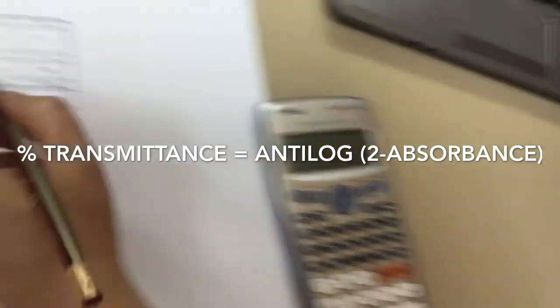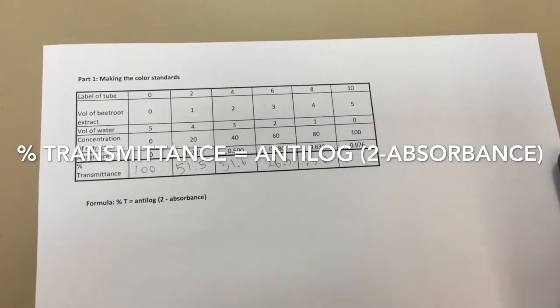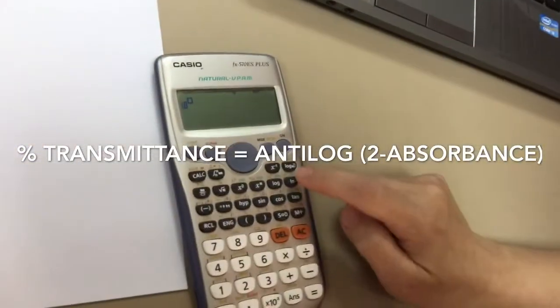We can then plot percentage transmission against our different concentrations of ethanol. That gives us a calibration curve.